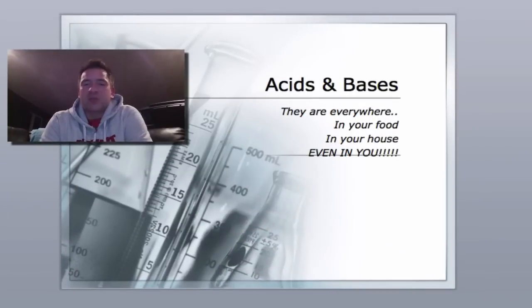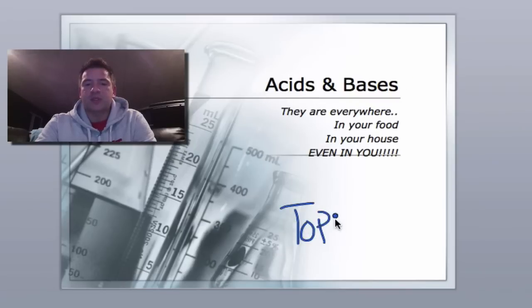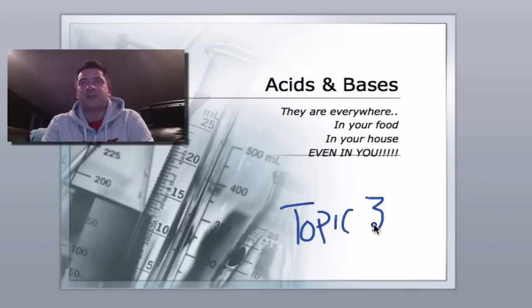Greg here. Today we're going to be talking about acids and bases. This is the unit of environmental chemistry and you can find this information in topic 3 in your textbook. I really like this topic. I love acids and bases. It's quite interesting. We're going to do a lot of fun stuff here.